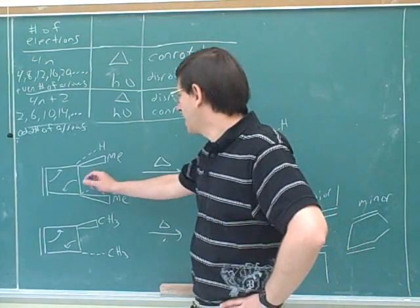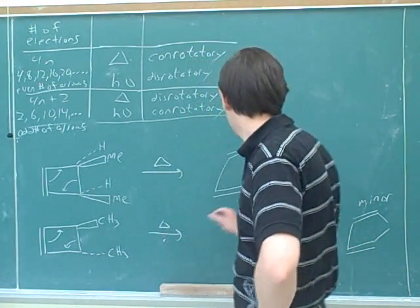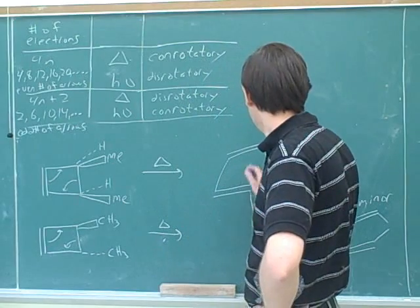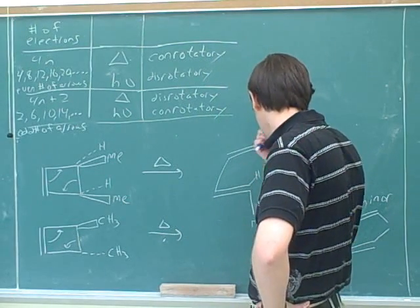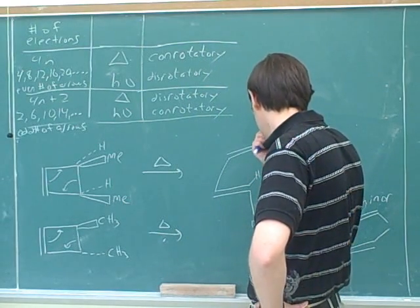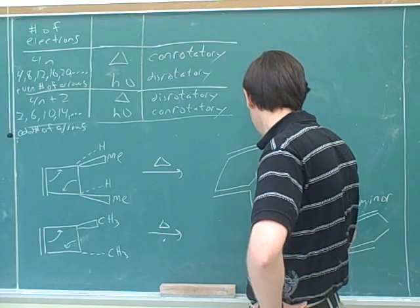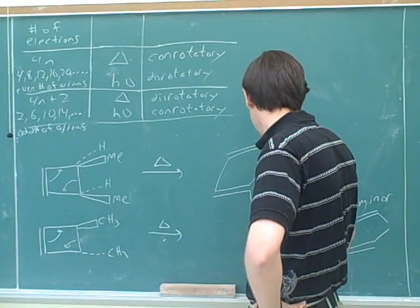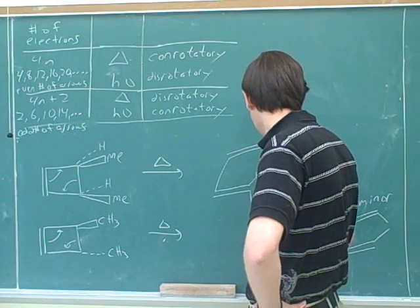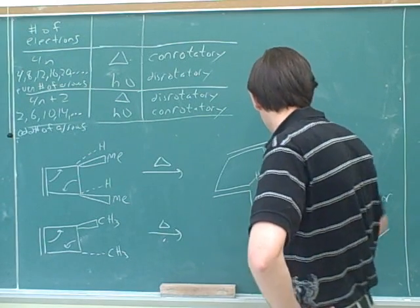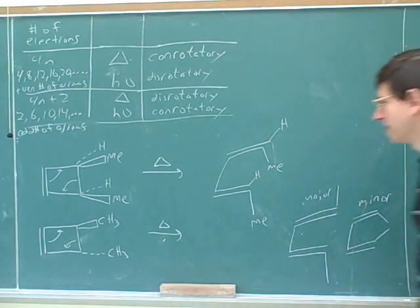When we did the previous ring-closure situation, we got really just one product. But here we got two products: one major and one minor.